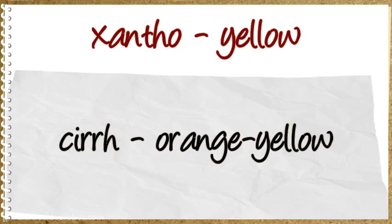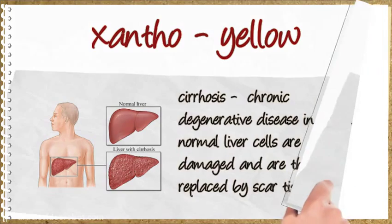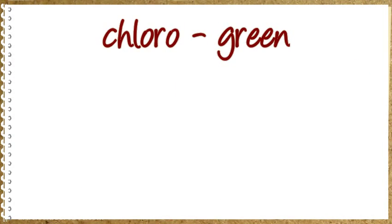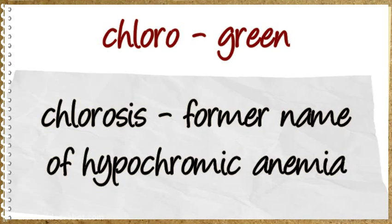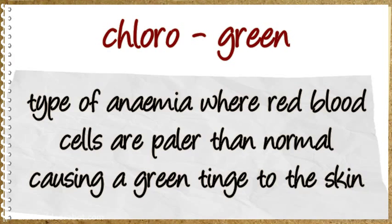Chir means orange-yellow. Cirrhosis: chronic degenerative disease in which normal liver cells are damaged and are then replaced by scar tissue. Chloro means green. Chlorosis: former name of hypochromic anemia, a type of anemia where red blood cells are paler than normal causing a green tinge to the skin.